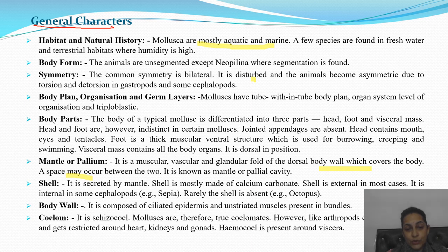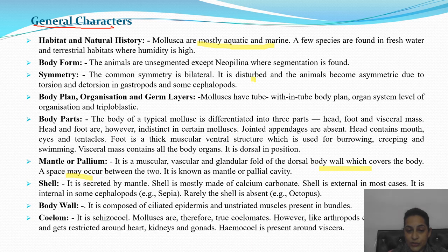The body wall is composed of ciliated epidermis and unstriated muscle present in bundles. The coelom is schizocoelous; Mollusca are therefore true coelomates. However, like arthropods, the coelom is restricted — present around the heart, kidneys, and gonads. Haemocoel is present; blood flows in the coelomic cavity around the viscera.